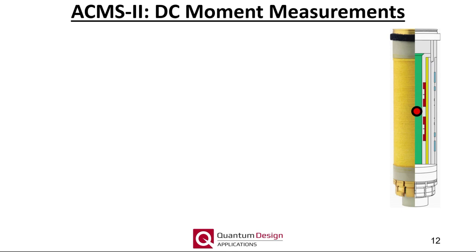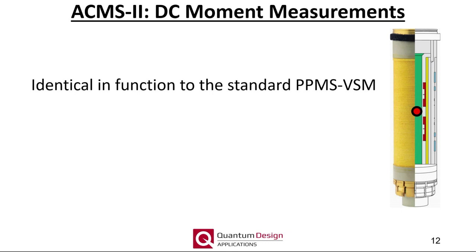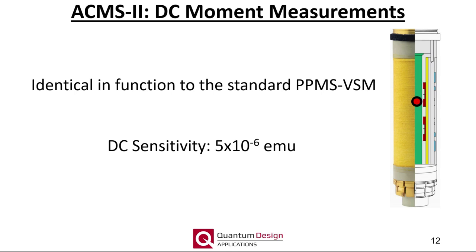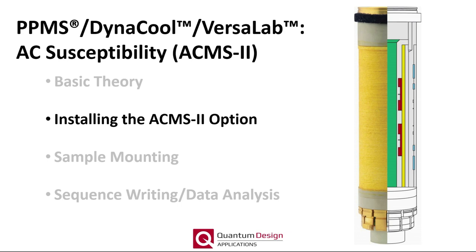The ACMS2 is also able to measure the standard DC moment and is virtually identical in functionality to the PPMS VSM option. Namely, the sample vibrates between the detection coils. The resulting sensitivity is between that of the VSM regular and large bore coil sets, about 5 micro EMU.